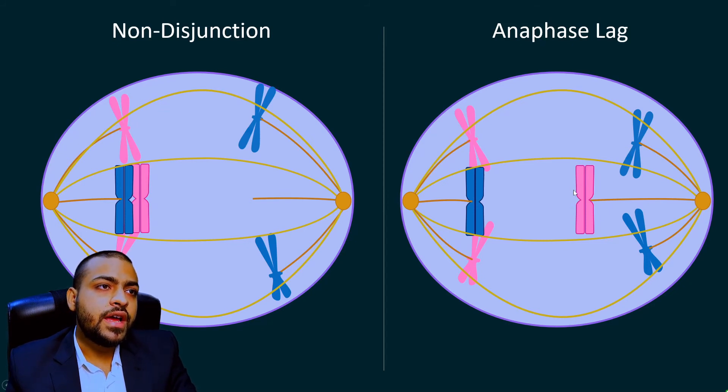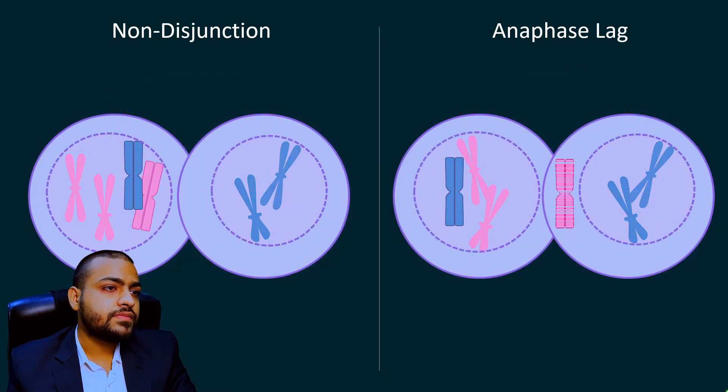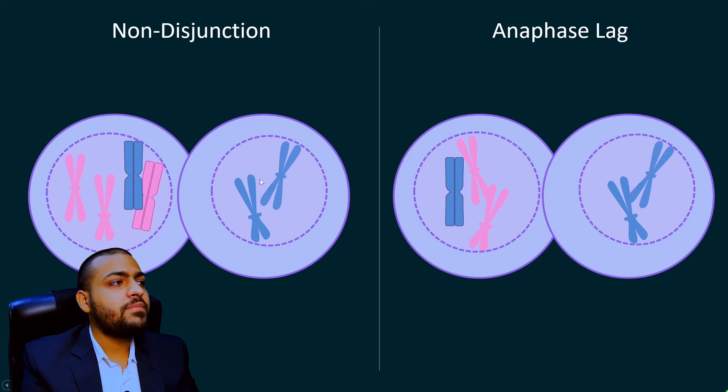What will be the end result? There will be monosomy here in one of the cell, one less chromosome, and in the other cell that cell is pretty much normal. But due to non-disjunction what happened here is that in one of the cell there is extra chromosome, but in the other cell there is monosomy.